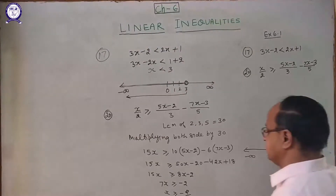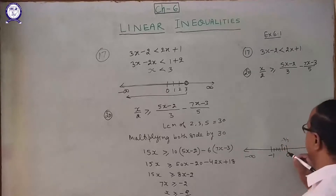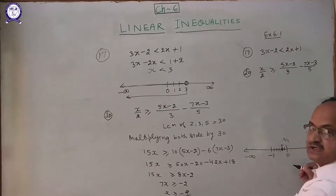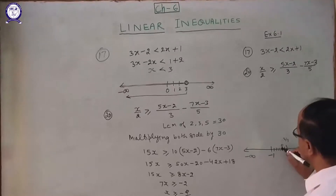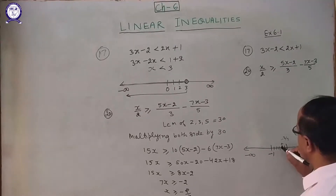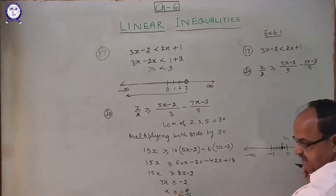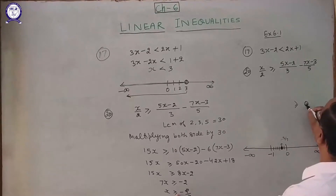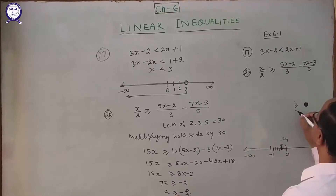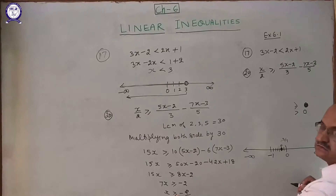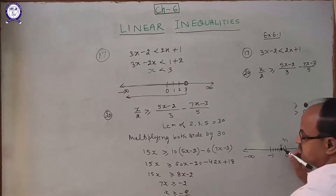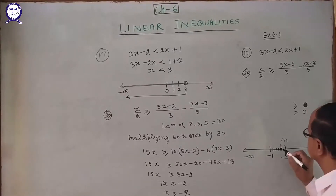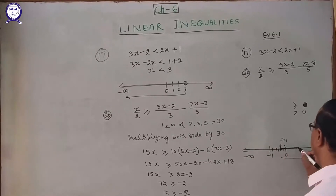Since x is greater than or equal to minus 2/7, and there is an equality sign, we darken the circle at minus 2/7. If only greater than without equality, the circle stays open. Since it is greater than or equal to, darken the circle and shade the line to the right — that is the answer.